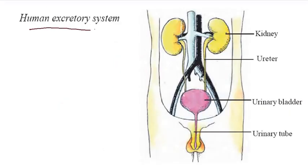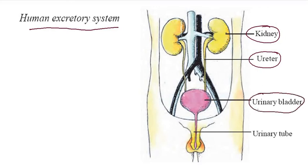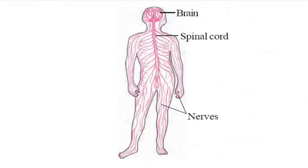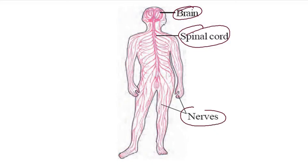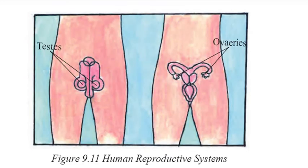This is the human excretory system. In the urinary bladder, toxic substances are collected. We also have the nervous system. This includes the brain and spinal cord. This is also the human reproductive system, including the urinary bladder.